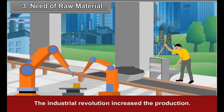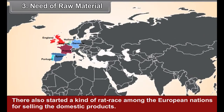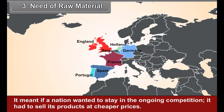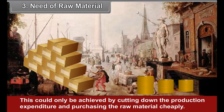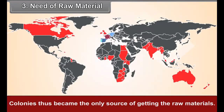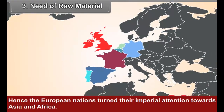Third, need of raw material: The industrial revolution increased production, but there was a scarcity of raw materials. There also started a kind of rat race among the European nations for selling domestic products. It meant if a nation wanted to stay in the ongoing competition, it had to sell its products at cheaper prices. This could only be achieved by cutting down production expenditure and purchasing raw material cheaply. Colonies thus became the only source of getting raw materials. Hence, the European nations turned their imperial attention towards Asia and Africa.